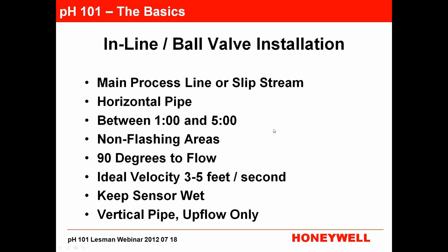A smart place is not necessarily an easy-to-get-to place. You want to get the sensor somewhere it's going to stay clean and see real, live process data all the time — not in a dead zone with slow flow where it gets fouled. The ideal installation is in a main process line or in a slipstream with good flow. It's best if that line is horizontal — you want to stay in a horizontal line rather than a vertical line if at all possible.